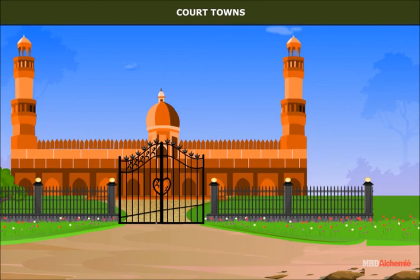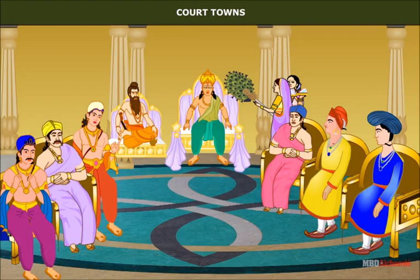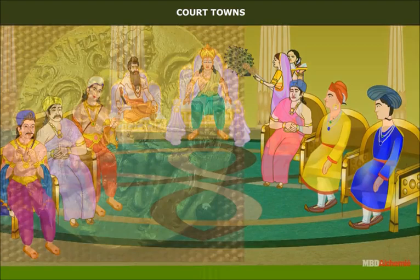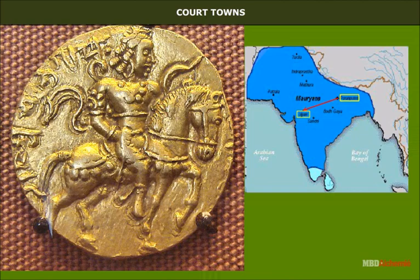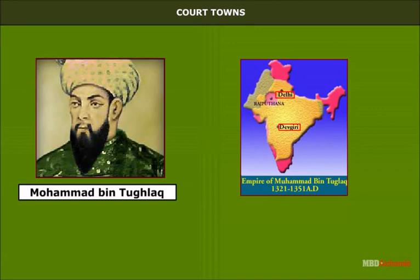Court towns were places where rulers and central authority resided. The king would hold his darbar proceedings in that town, and it often doubled as the capital. Sometimes court towns were shifted from one place to another. For example, Chandragupta shifted his capital from Pataliputra to Ujjain. Muhammad bin Tughluq shifted from Delhi to Devagiri or Daulatabad, a move of 1500 km from Delhi.